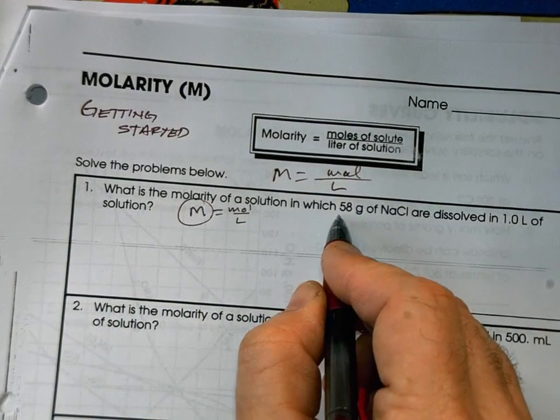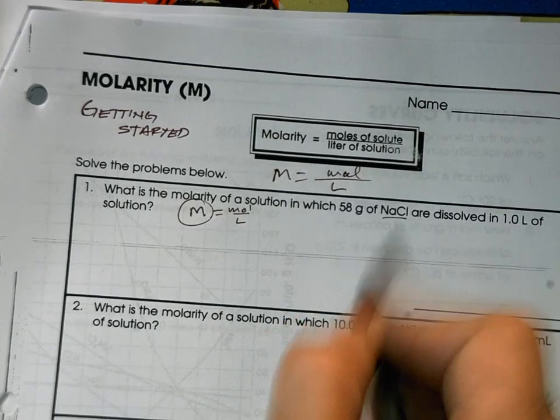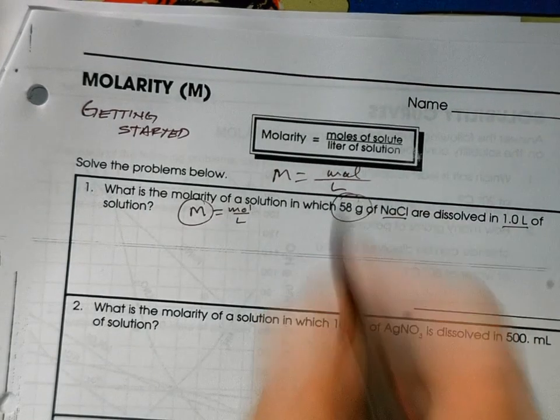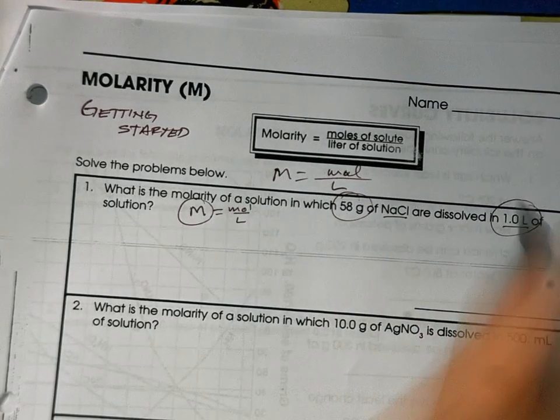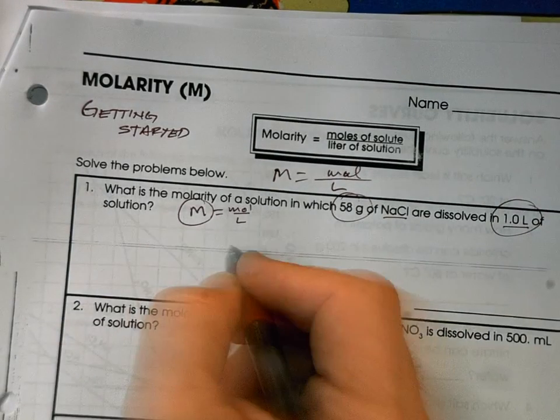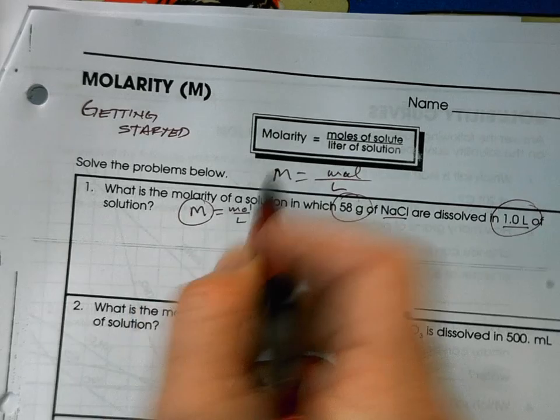Of a solution in which you have 58 grams of NaCl are dissolved in this much water, we can convert this into moles. So that's going to be one of the first steps you're going to have to do. They're giving you the liters. So to get this thing set up, we need to...